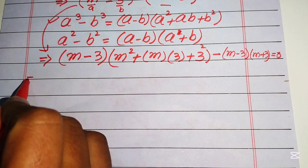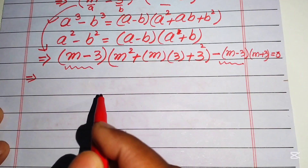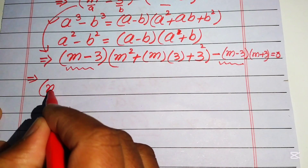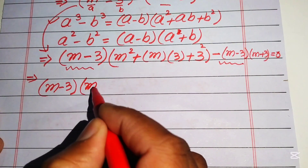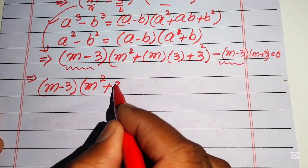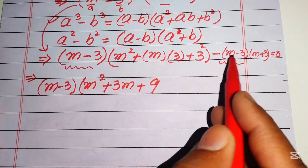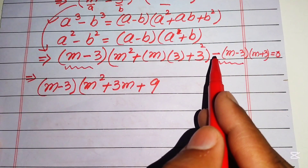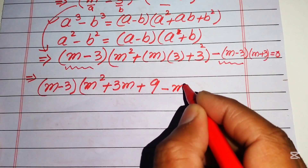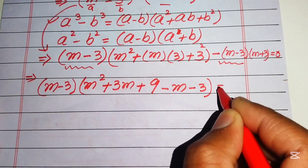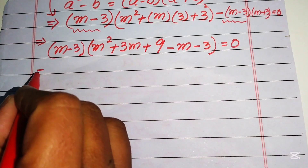We see that (m minus 3) is the common factor in both terms. Taking out the common factor (m minus 3), the remaining terms are m squared plus 3m plus 9, minus (m plus 3). We multiply the negative sign through, giving minus m minus 3, and this equals 0.